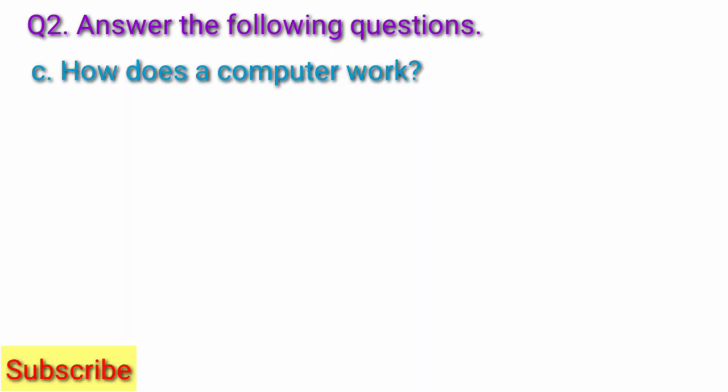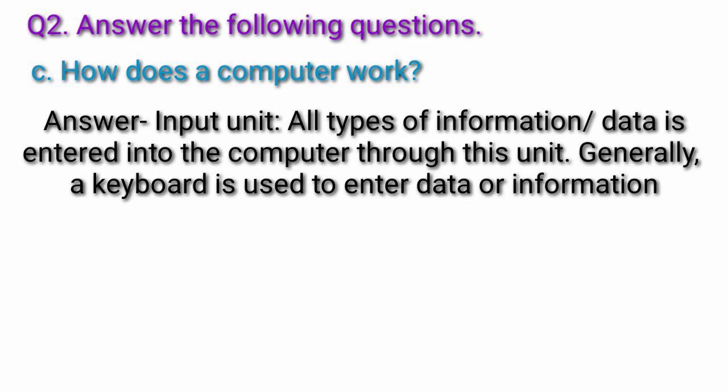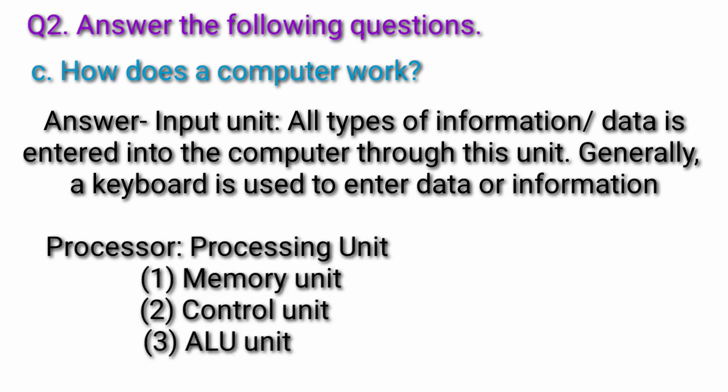Question c: How does a computer work? Answer: First input unit. All types of information or data is entered into the computer through this unit. Generally a keyboard is used to enter data or information. Second processor.